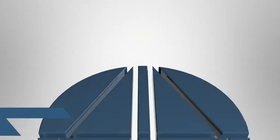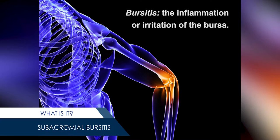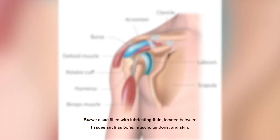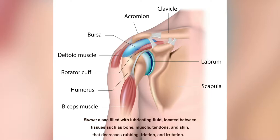What is subacromial bursitis? Bursitis is the inflammation or irritation of the bursa. The bursa is a sac filled with lubricating fluid located between tissues such as bone, muscle, tendons, and skin that decreases rubbing, friction, and irritation.